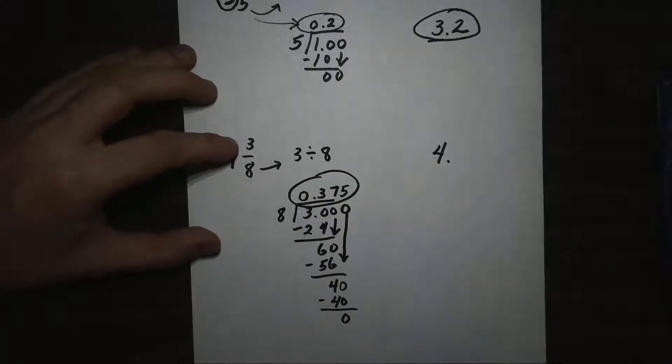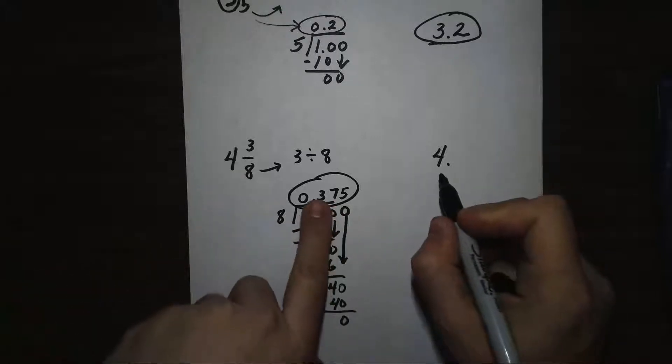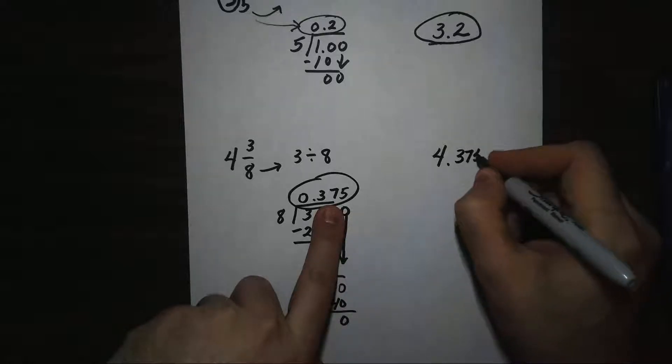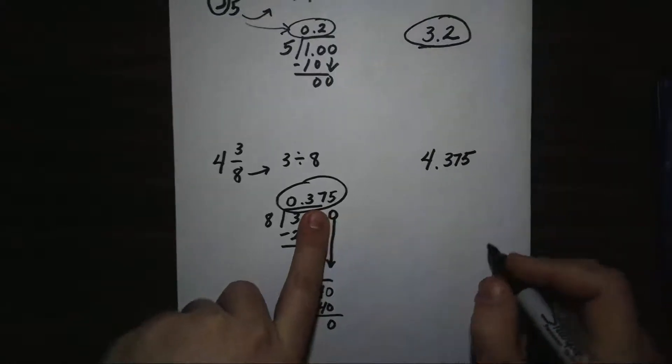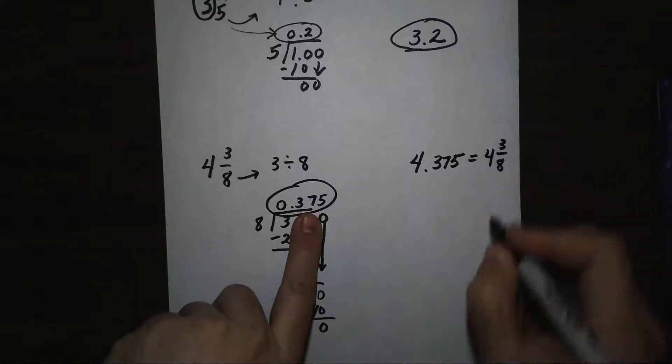Now, my problem was 4 and 3/8, and I've already got my 4 there. Now, I just need to stick on the 3/8, the fraction part, which was 0.375. So 4.375 is the same thing as 4 and 3/8.